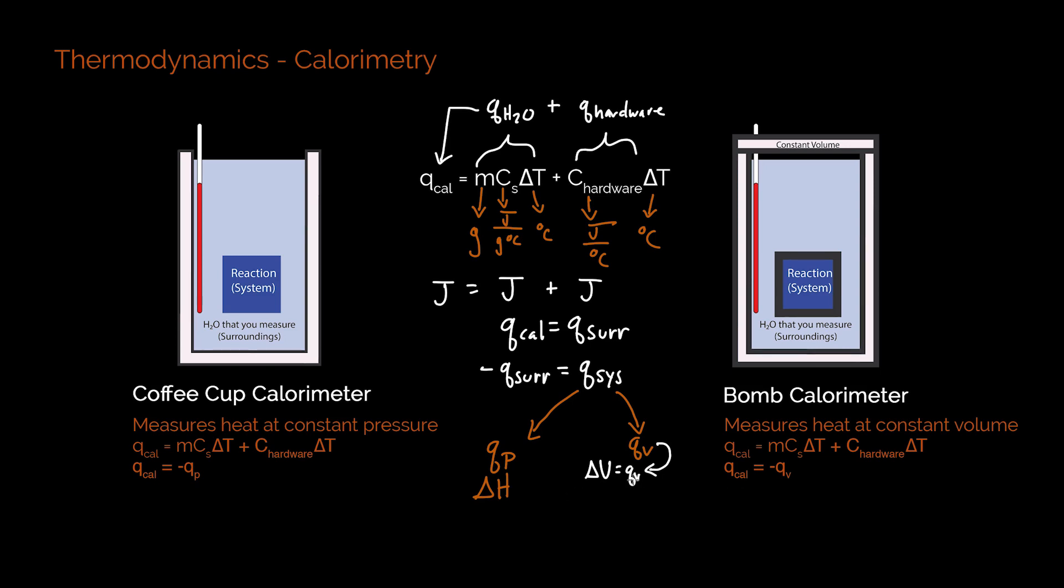So to understand how we get from q system to either delta h or delta u, we need to understand the two different types of calorimeters.